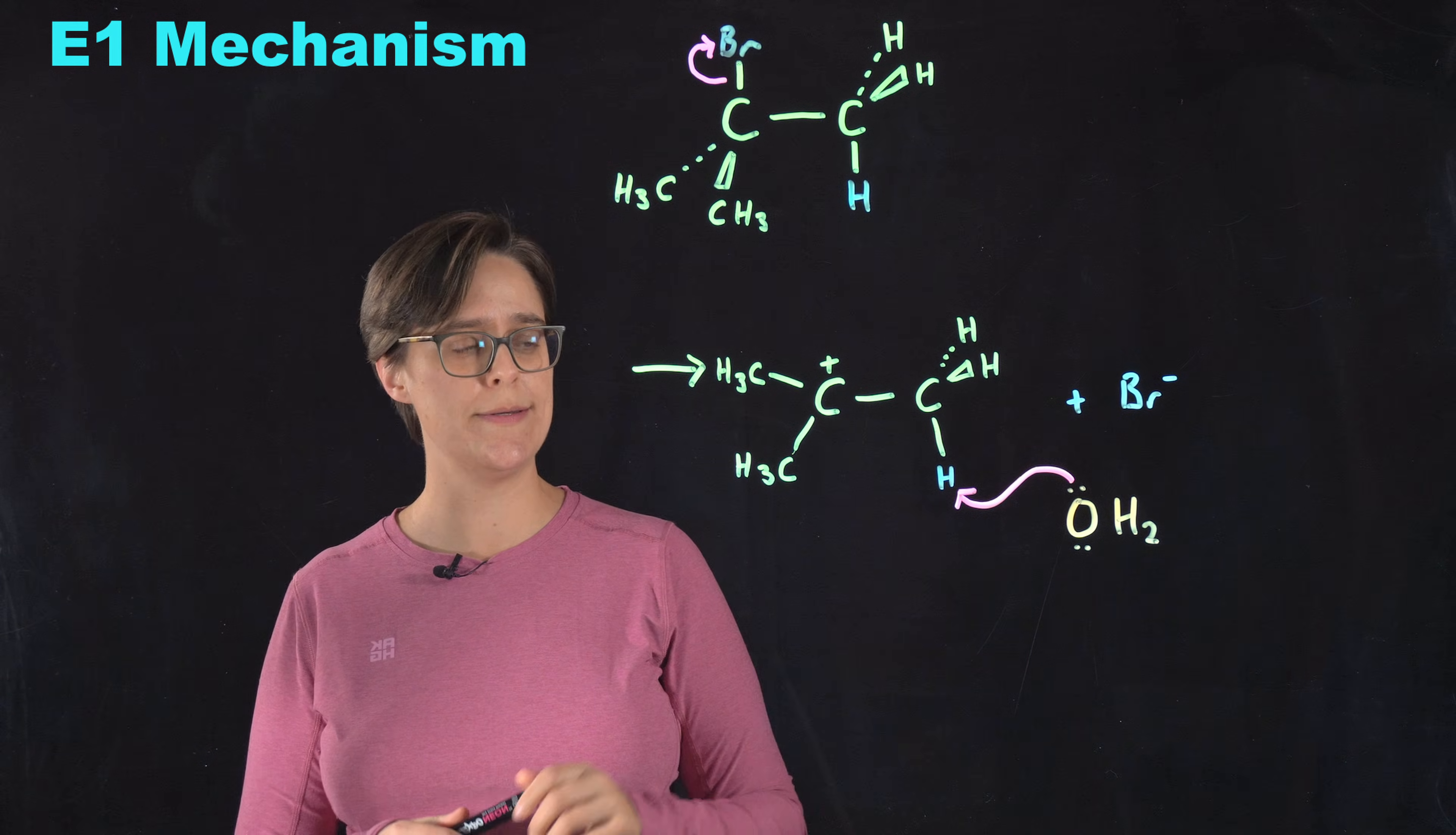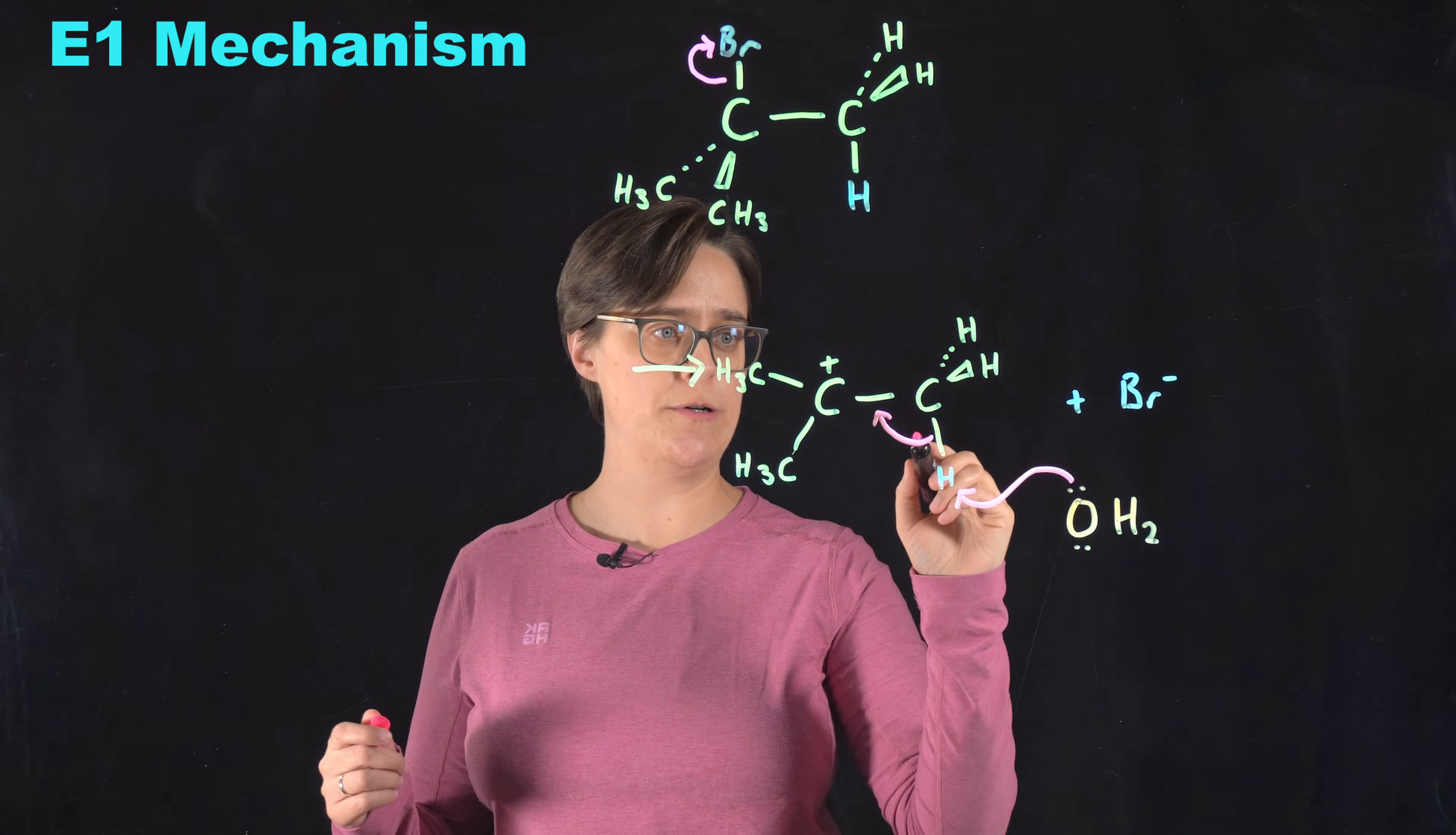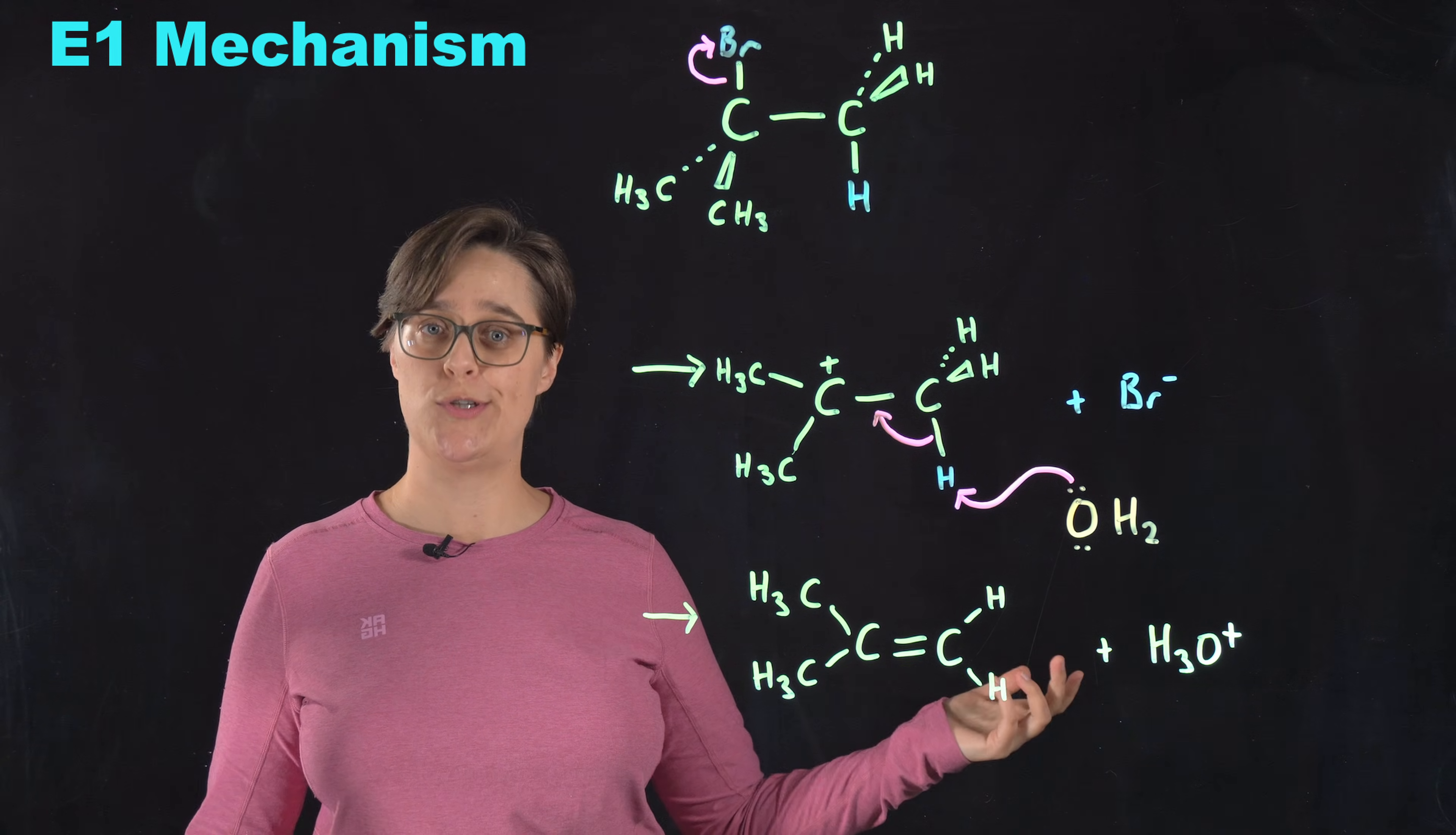When that happens, a new bond is going to form between this oxygen and this hydrogen. That hydrogen is not going to like having two bonds. So at the same time, this bond is going to break. These electrons need to go somewhere. They are going to go towards that positive charge so that a double bond is going to form here. So this is the product. Carbon is back up to four bonds—one, two, three, four. So it is happy.